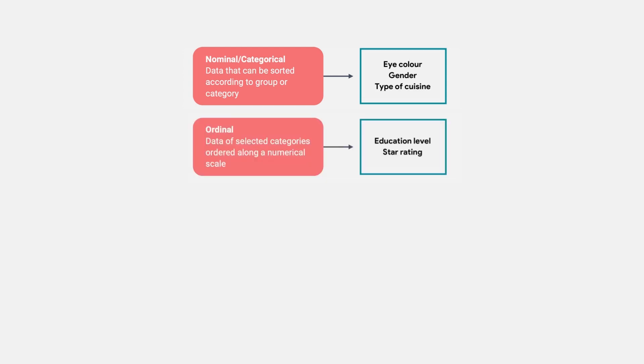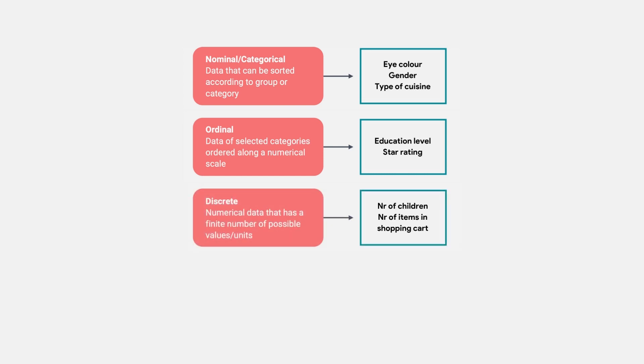The second type of data is called ordinal — this is data of selected categories ordered along a numerical scale. For example, it can be education level: high school, bachelor, master, or even a star rating: one star, two star, three stars, and so on. The third type of data is called discrete — numerical data that has a finite number of possible values and units. An example could be the number of children in a family: zero, one, two, three — or the number of items in a shopping cart: 10, 20, 30, etc.